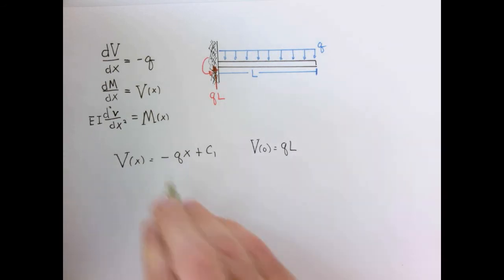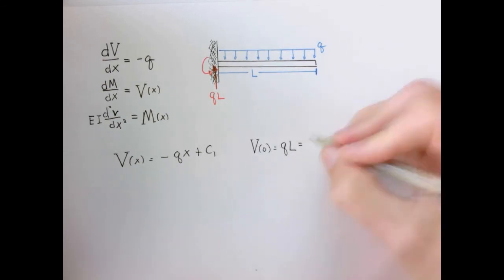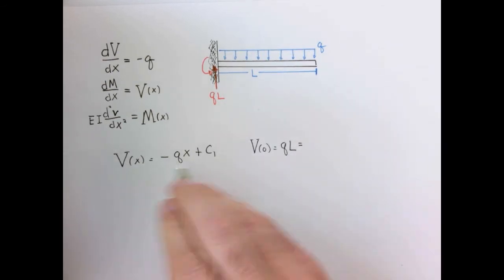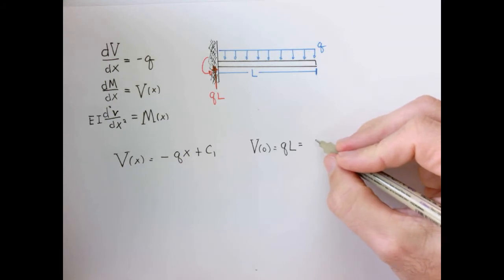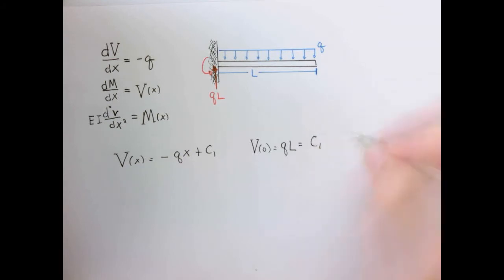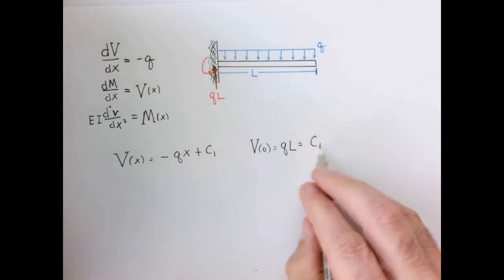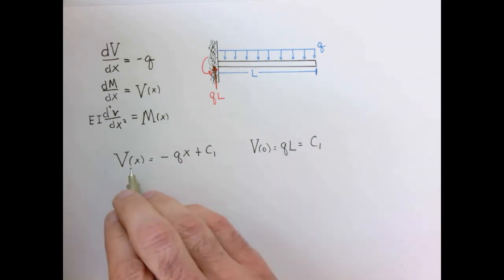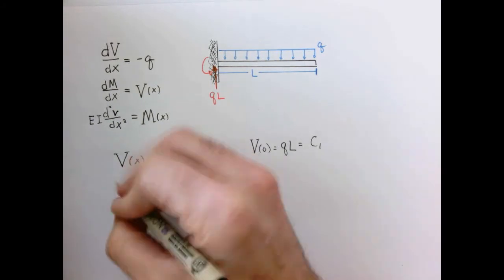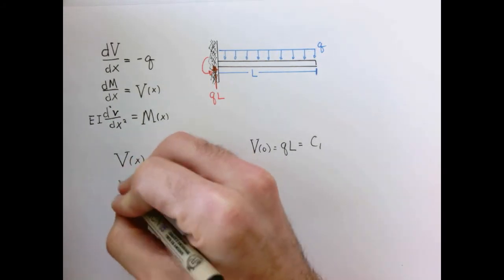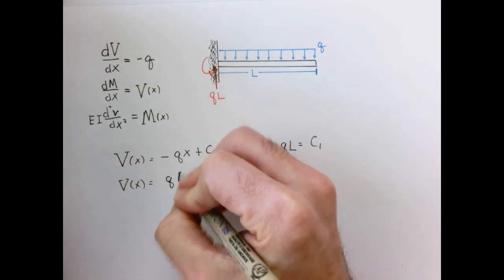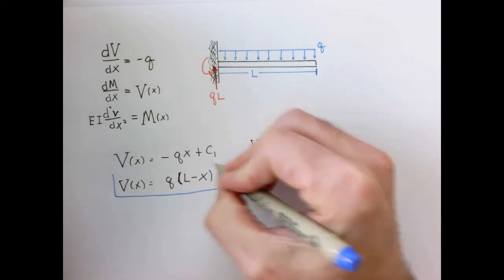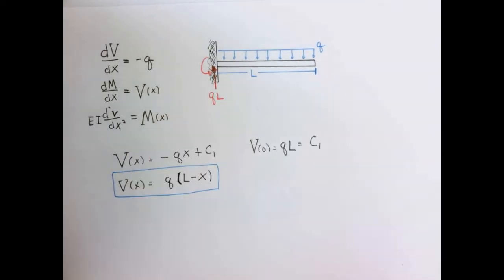Since V(0) equals QL, that has to equal minus Q times zero plus C1. So very simply, our expression for the shear equation is determined. Now let's turn to the moment.